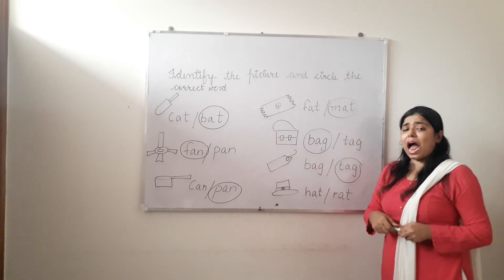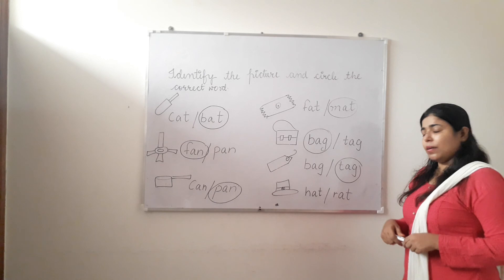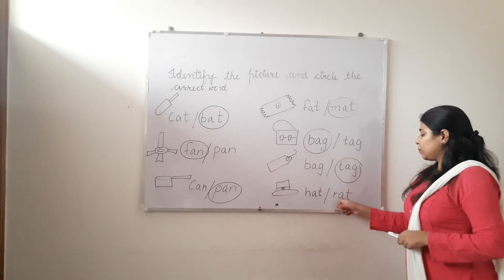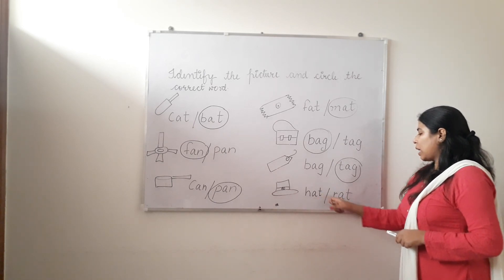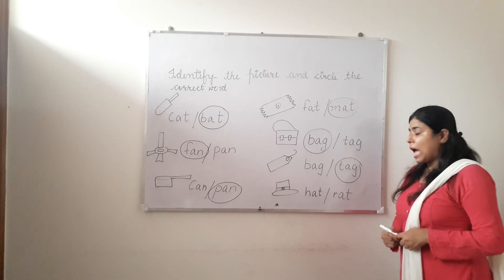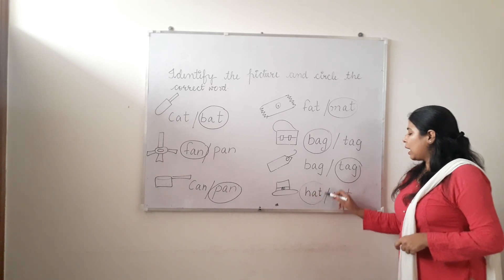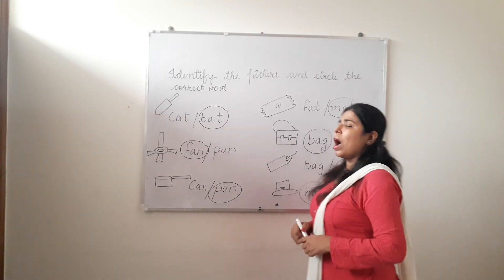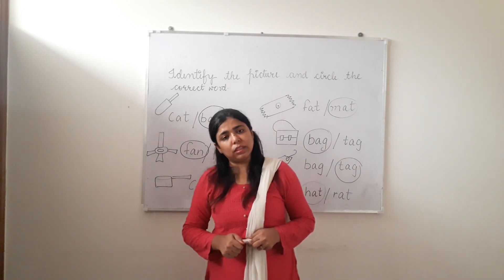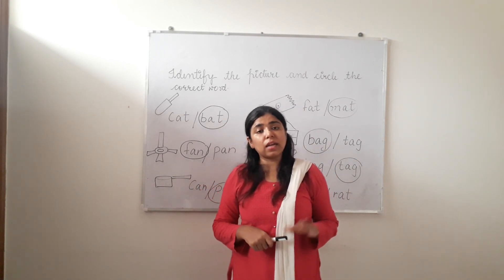Okay. Now what is this? Hat. You wear it on your head. You wear it on your head. Tell me, what is this? Hat or rat? Hat. So we will circle hat. So in that way you have to do practice of this. Okay, till then take care. Goodbye.